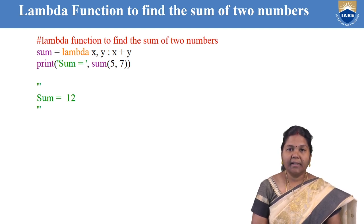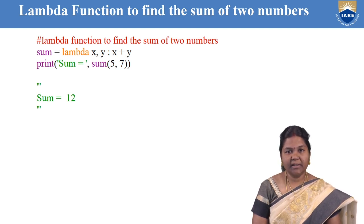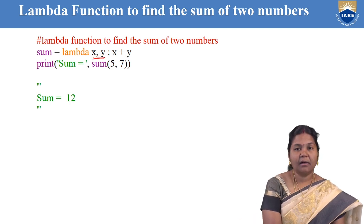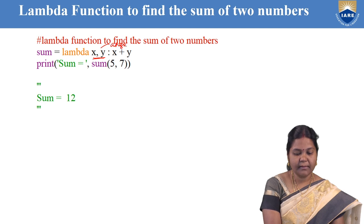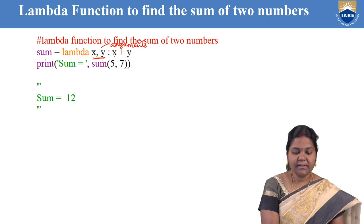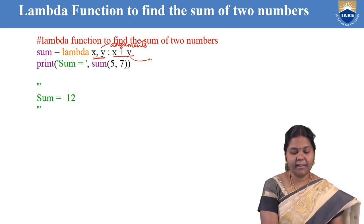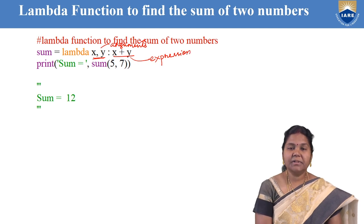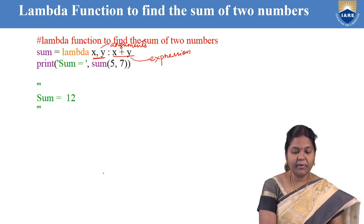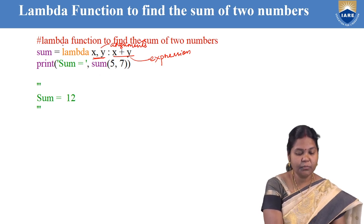First of all, we are writing the keyword lambda. For two numbers we want to find the sum of, we are taking two arguments here. So lambda followed by x comma y — these are known as the arguments. Lambda is the keyword, x and y are the arguments, colon, and x plus y is the arithmetic expression. The x plus y will be computed and the output of the function is assigned to a variable.